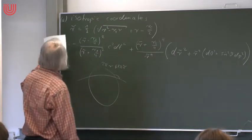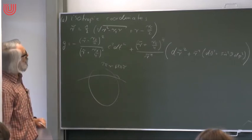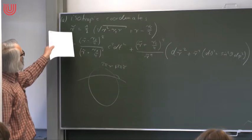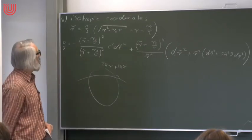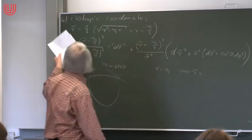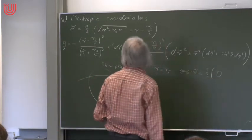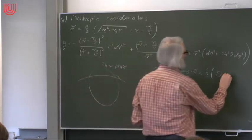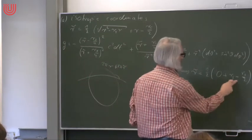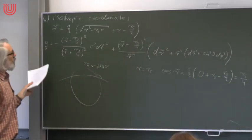What I forgot last time is what happens with the surface r = rs. In the old Schwarzschild coordinates the metric became singular at r = rs. In isotropic coordinates, if r = rs then the square root gives zero, so r-tilde = rs/4. At r-tilde = rs/4 there is no zero in the denominator, but there is a zero in the numerator — the gtt component becomes zero.